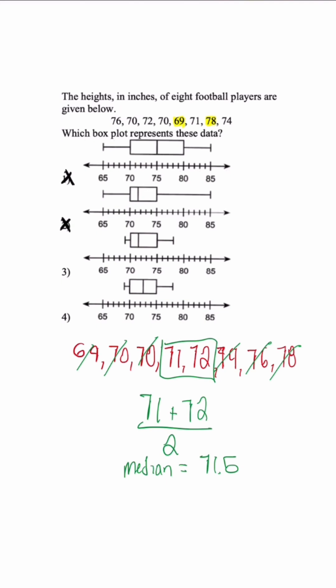And when I look at my answer choices, it looks like answer choice 3 is going to have a median that represents 71.5. This is how you could use process of elimination to find the correct box and whisker plot based on the data that they gave us.